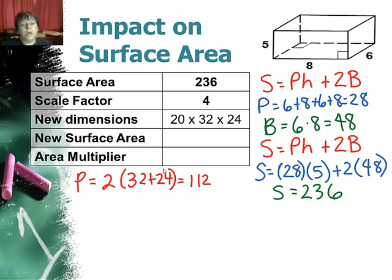My new surface area, well I have a new perimeter. 2 times, and I did this just to save some space, it's going to be 32 plus 24, and really plus another 32 and 24, but I can just multiply that sum by 2, and I get 112. The area of the base is going to be 32 times 24, which is 768.